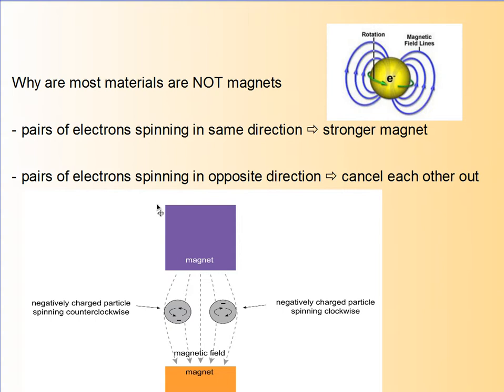Iron is easily magnetized because it tends to have electrons that want to spin in the same direction.